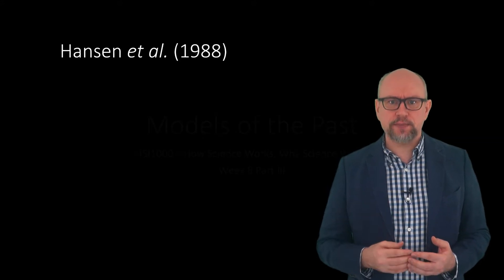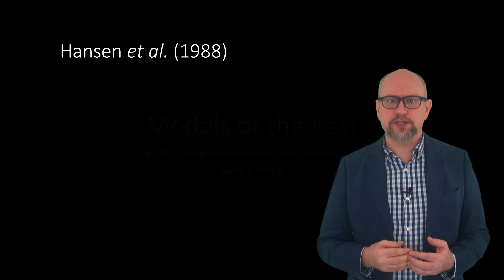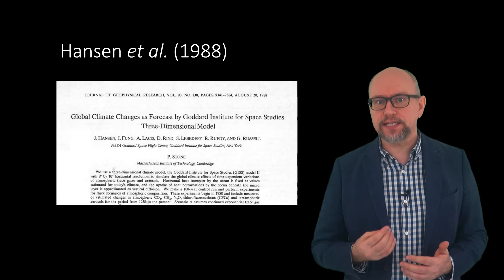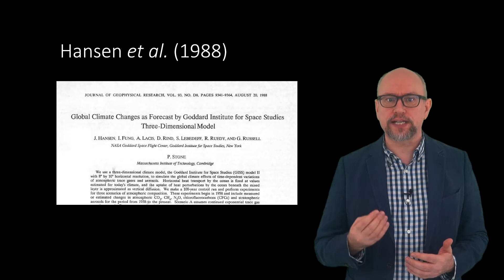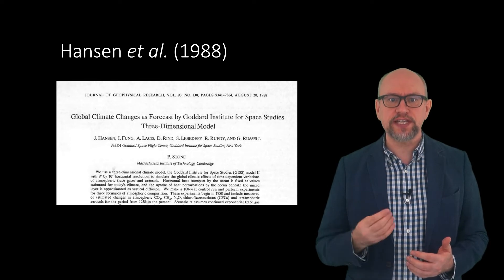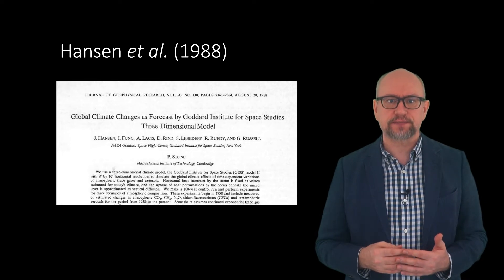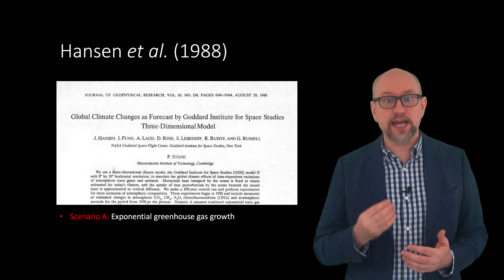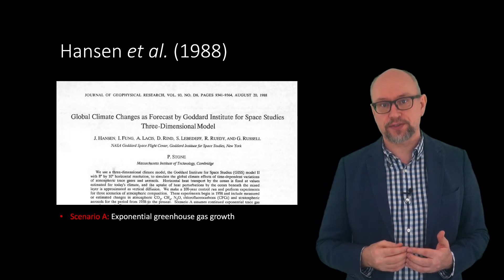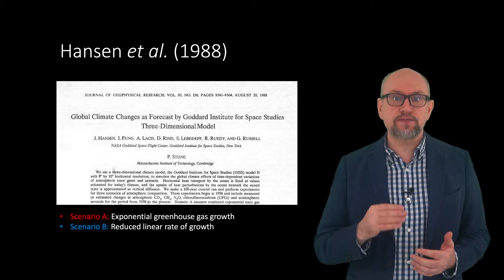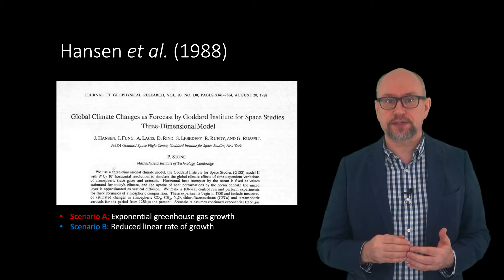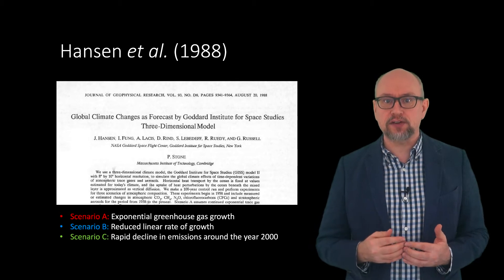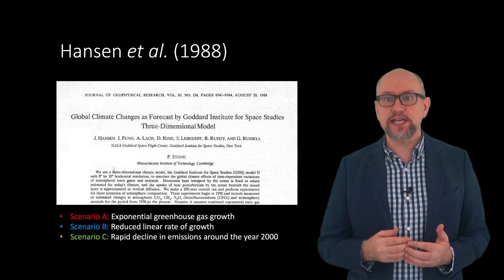Perhaps the most notable climate change projections of the 1980s were those of James Hansen. In 1988, Hansen and colleagues reported climate model simulations for three different emission scenarios. Scenario A assumed continued exponential greenhouse gas growth. Scenario B assumed a reduced linear rate of growth. Scenario C assumed a rapid decline in greenhouse gas emissions around the year 2000.